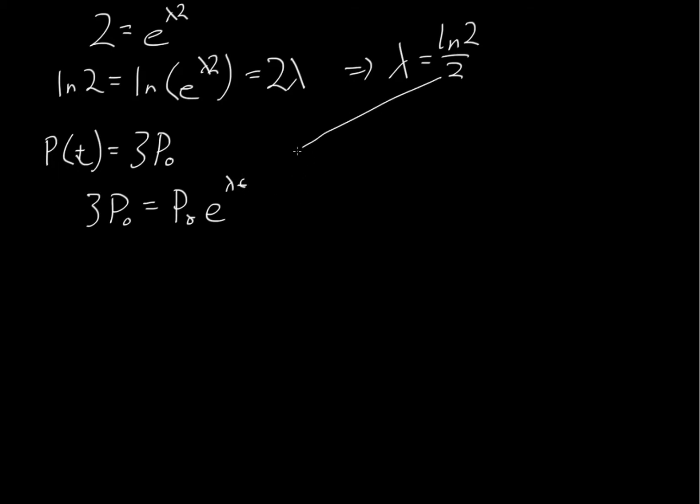However, we know that lambda is equal to the natural log of 2 over 2. Therefore, we can substitute this in and solve for t. So p-naught e to the natural log of 2 over 2 times t.